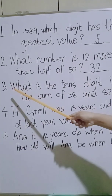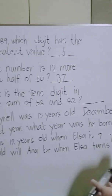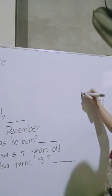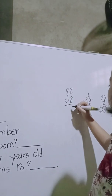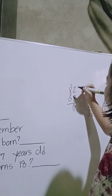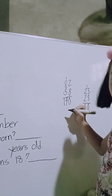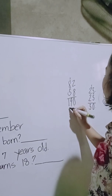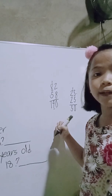Number 3. What is the tens digit in the sum of 58 and 82? All we have to do first, we are going to add 58 plus 82. 8 plus 2 is 10, 0 carry 1. 5 plus 8 is 13, plus 1 is 14. So 140. The question asks what is the tens digit. This is 1's, this is 10's, and this is 100's. So 4 is the correct answer, because 4 is the tens digit.